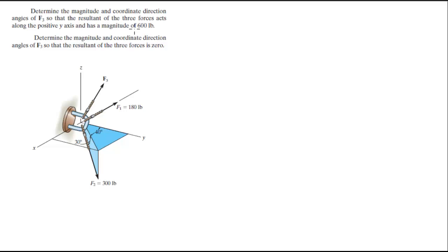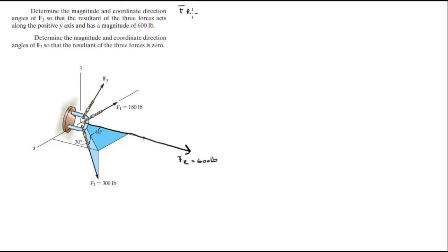We're going to do these two problems at the same time. Determine the magnitude of F3 so that the resultant force of the three forces acts along the positive y-axis with a strength of 600 pounds. So F of R equals 600 pounds along the y-axis.